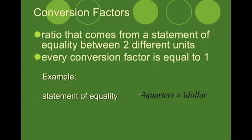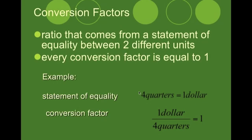We see an example here. Four quarters equals a dollar. Four quarters and one dollar are the same amount of money. So, if we put them in a fraction and since they're the same, if you multiply something by the same thing, it always equals to one.